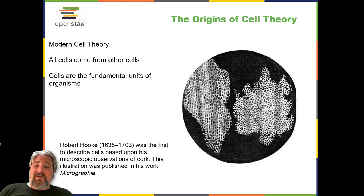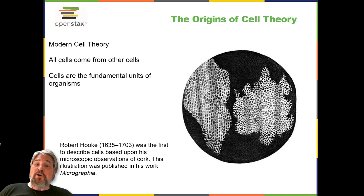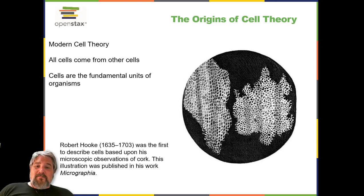The origin of cell theory. The English scientist Robert Hooke first used the term "cells" in 1665 to describe the small chambers within cork that he observed under a microscope of his own design. To Hooke, thin sections of cork resembled honeycomb, or small boxes or bladders of air. At the time, Hooke was not aware that the cork cells were long dead and therefore lacked the internal structures found within living cells.